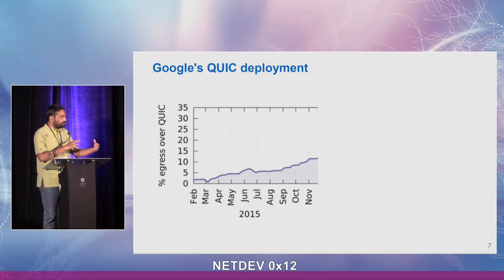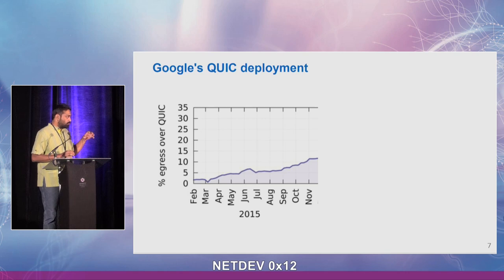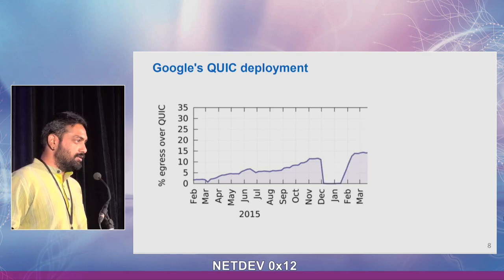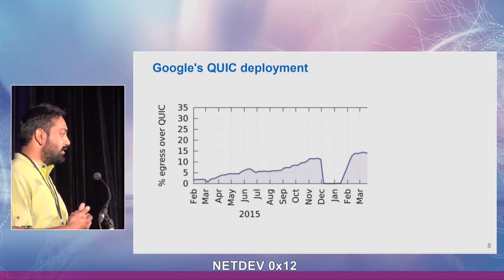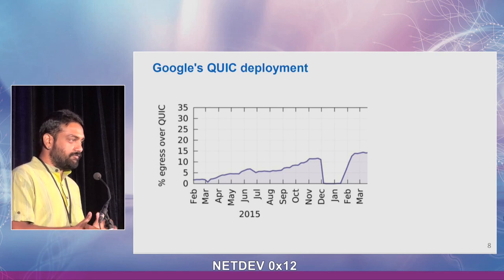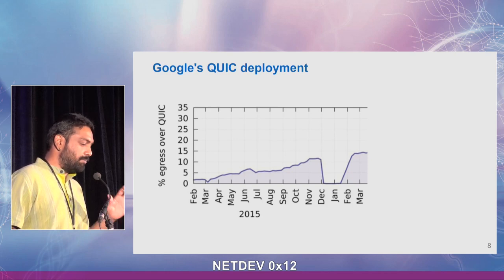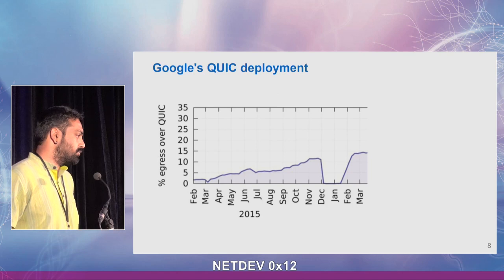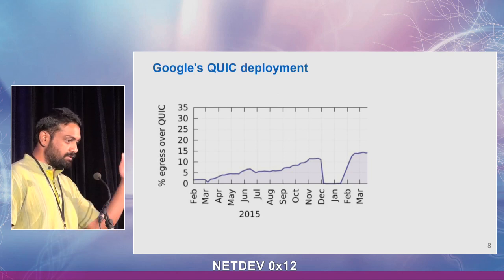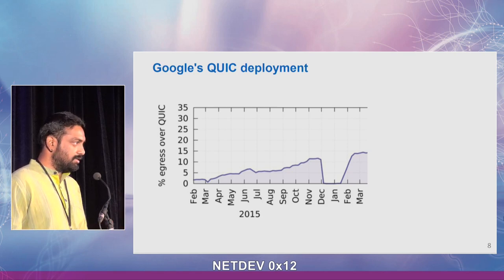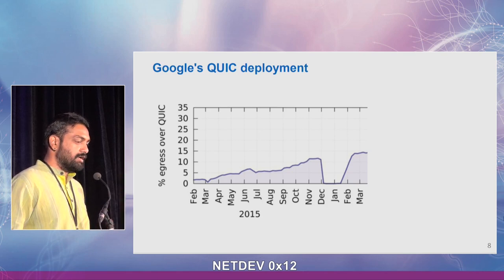Let's look at how QUIC deployment looked at Google. This is in 2015. We started to deploy QUIC and slowly increased it — we had controls. We were able to control the amount of QUIC we were serving, and percent egress slowly increased as we saw improvements and nothing broke terribly. We kept increasing it steadily until some point when we decided we had to turn off QUIC. This was a crypto bug at the client. We found it, turned it off immediately, fixed it, and shipped it out again in January 2016.